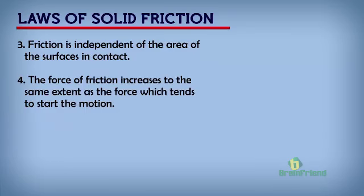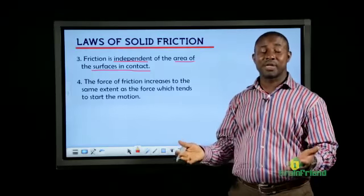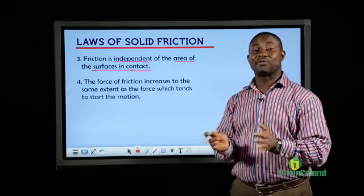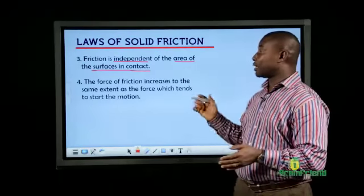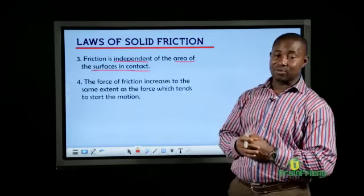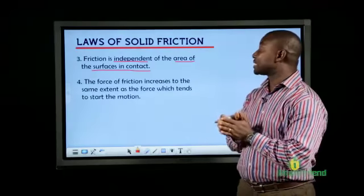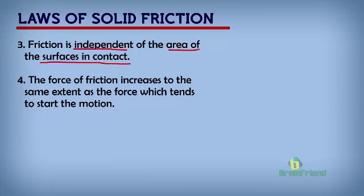Number three: friction is independent of the area of the surfaces that are in contact. Simply put, if you have a large surface or if you have a smaller surface, it does not change the fact that friction will occur. It does not increase or reduce the amount of friction — it only tells us that friction will take place because these surfaces are in contact.